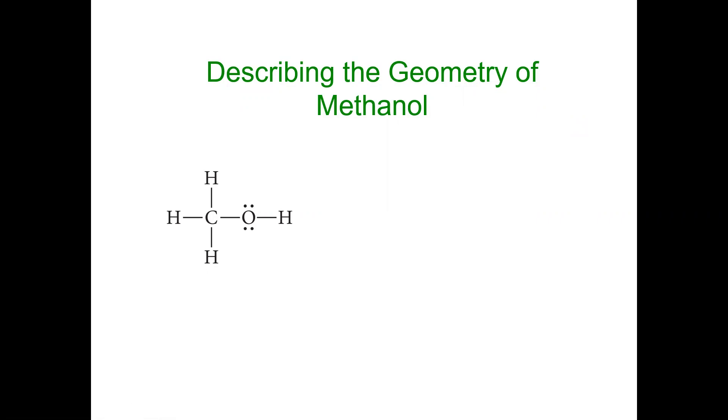But what I'm going to talk about now is we can apply everything we've learned from Lewis dot structures and valence shell electron pair repulsion theory to describe the geometry of molecules that have more than one central atom.